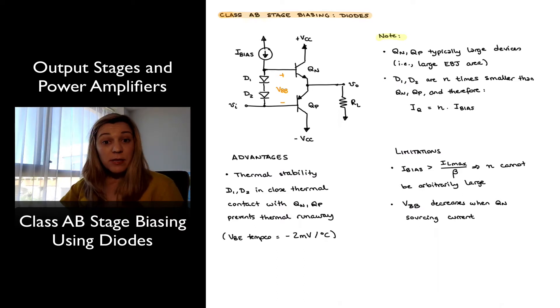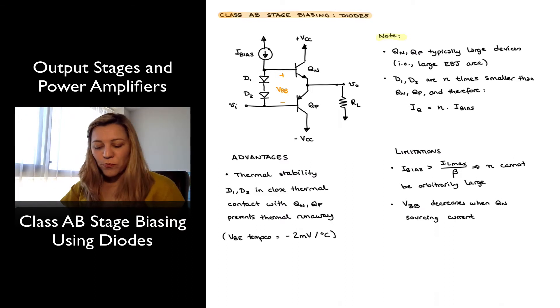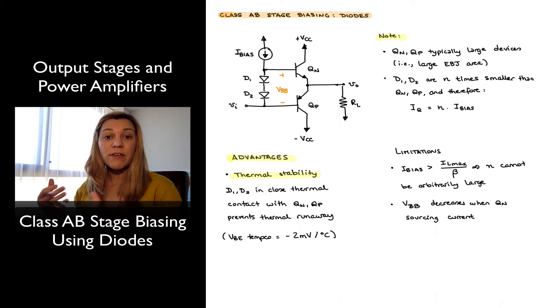This circuit has some advantages and some limitations. The key advantage of this circuit is that it provides thermal stability, and the reason for that is, as we shall see, the class AB output stage is prone to thermal runaway. It has a positive feedback mechanism, whereby an increase in temperature produces changes in the circuit that essentially reinforce that change, reinforce the continued increase in temperature.